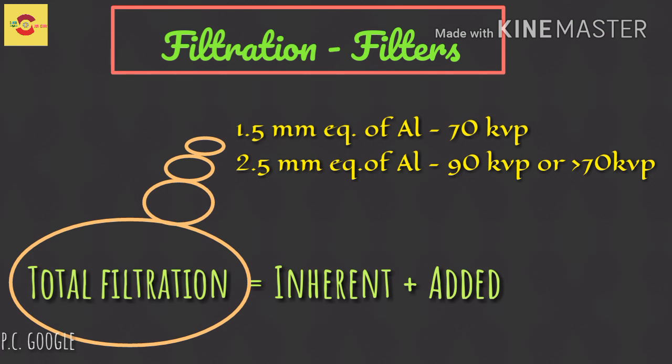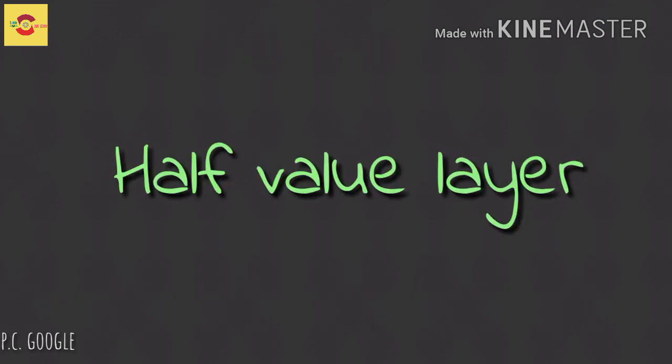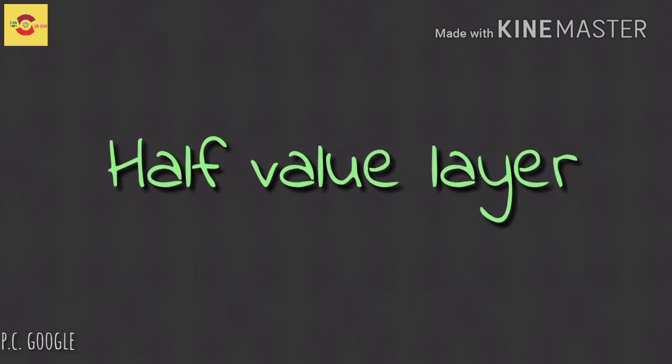Remember a term: half value layer. It is the thickness of aluminum required to reduce by half the number of x-ray photons passing through it.